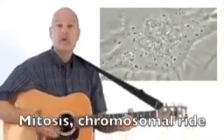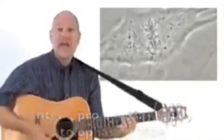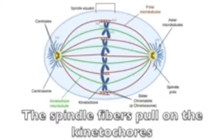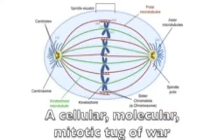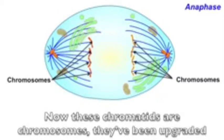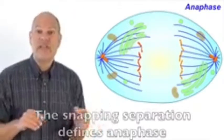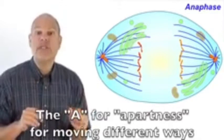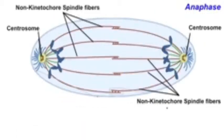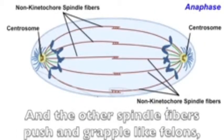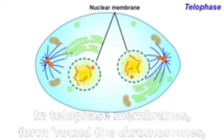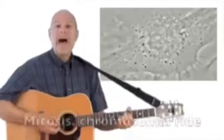Mitosis — chromosomal ride in a pro-meta-anaphase-telophase divide. Eukaryotes flow from one cell to two. The spindle fibers pull on the kinetochores in a cellular molecular tug of war. The centromere snaps, sisters get separated — now those chromatids are chromosomes, they've been upgraded. That snap defines anaphase: 'A' for apartness, for moving different ways. Kinetochore spindle fibers separate the sisters; other spindle fibers push the cell elliptical like a watermelon. In telophase, membranes form around the chromosomes as they spread out and nucleoli come home.